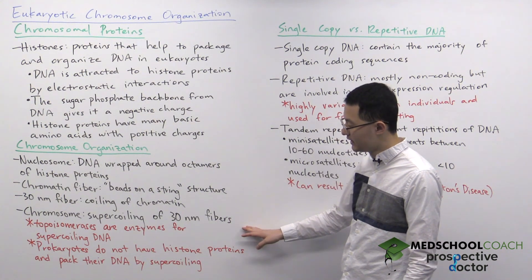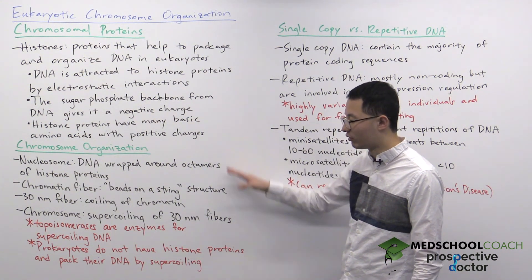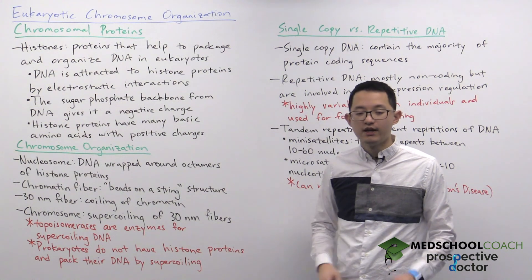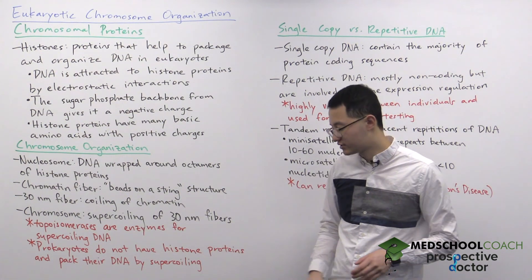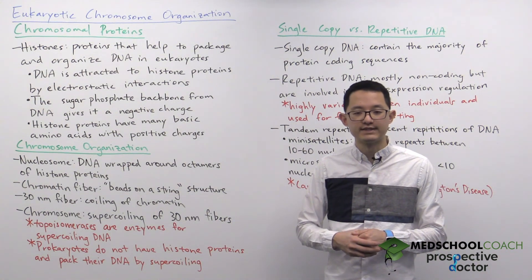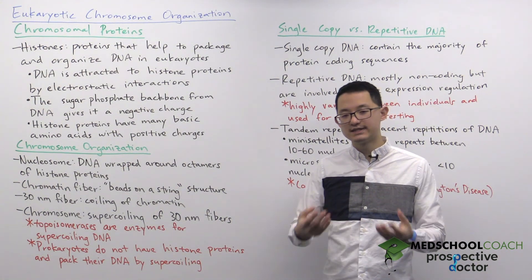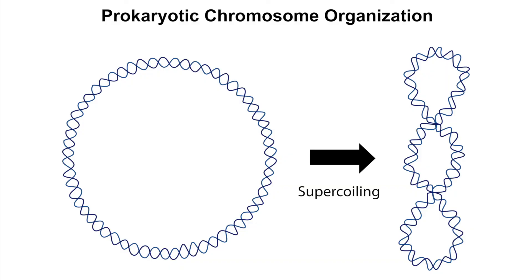This is how chromosomes are organized in eukaryotes. For prokaryotes it's a bit simpler, because prokaryotes do not have histone proteins. As you can see in this diagram, prokaryotes are able to pack their DNA with supercoiling alone — essentially taking the DNA, forming coils, and then coiling those coils to form supercoils.